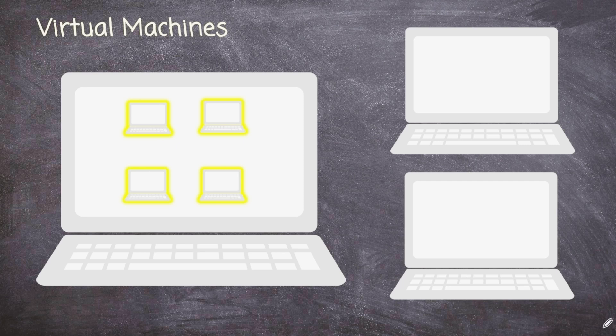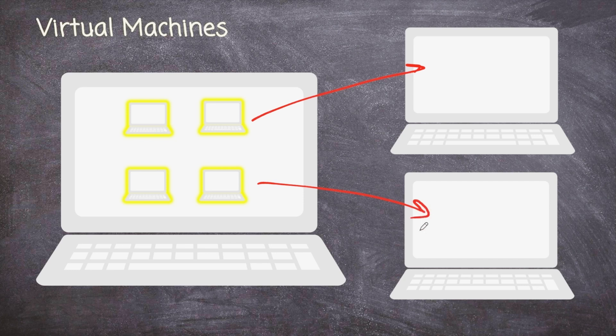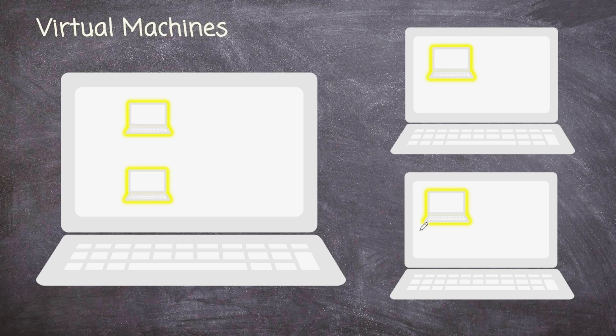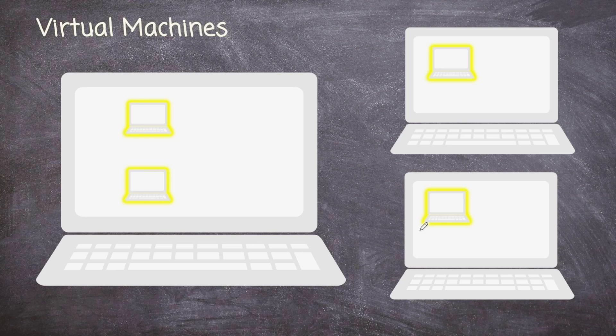Now the cool thing about virtual machines is that because they're not physical, we can actually move them to other physical systems pretty easily. Now these can be in the next room, they can be on the other side of the globe. So that's why virtual machines are so important to cloud computing, because the cloud computing vendors can just build the hardware to run the software to support virtual machines. And then we can shuffle our virtual machines around however we want to.